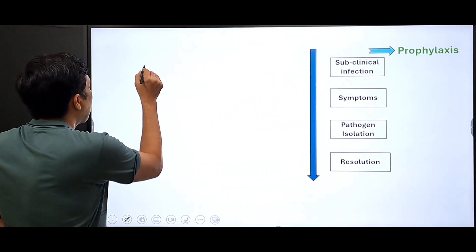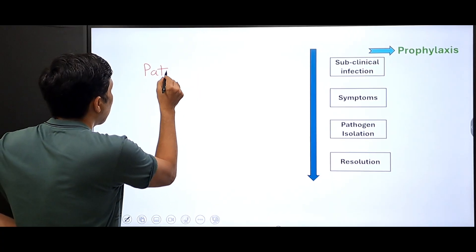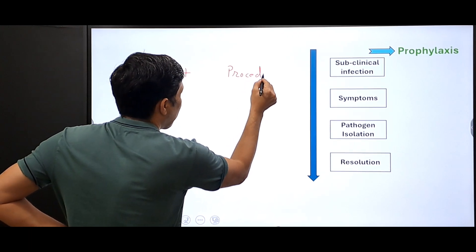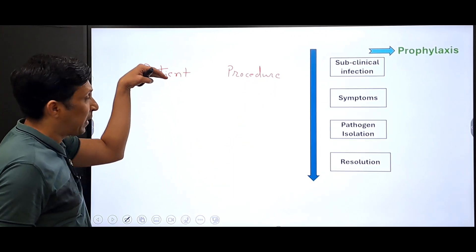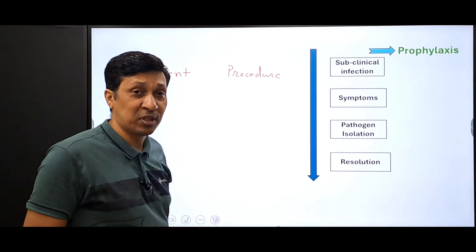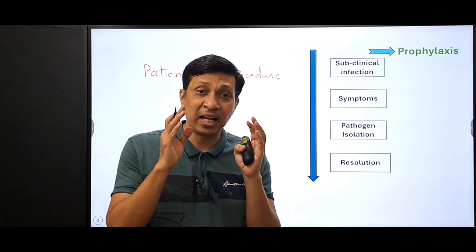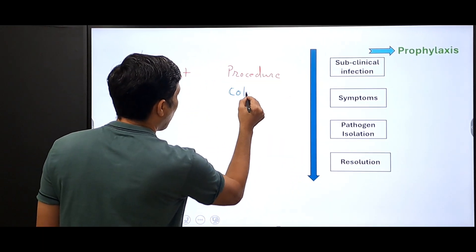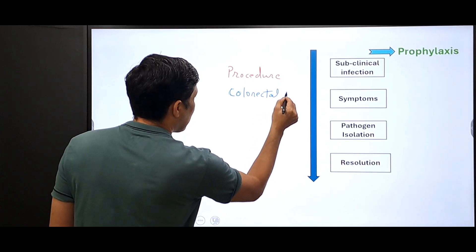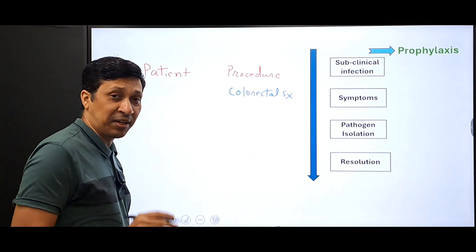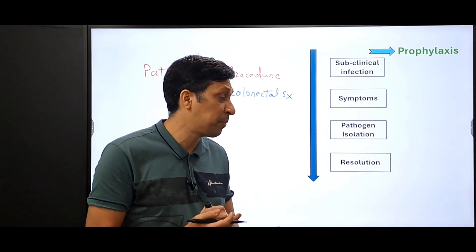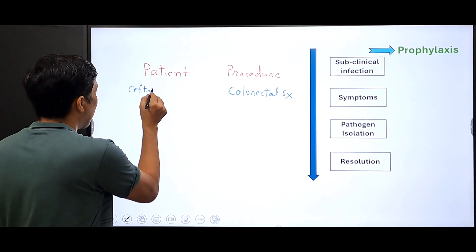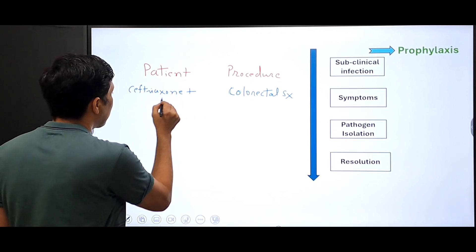Prophylaxis is used when either the patient is high risk or the procedure is high risk such that there can be infection. For example, if the procedure is colorectal surgery, it is a high risk procedure and even if the patient is normal and not having any medical disease, we use prophylaxis and give ceftriaxone plus metronidazole.